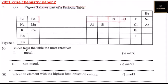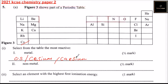Part 1: select from the table the most reactive metal. The most reactive is Cs — Caesium. This is the most reactive metal, which is in Group 1. It has the highest atomic radius in that group, making it the most reactive metal in Group 1.